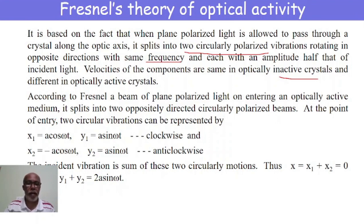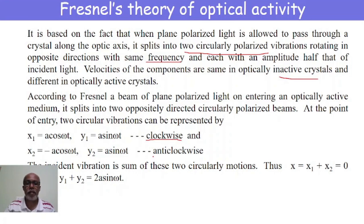At the point of entry, the two circular vibrations can be represented as: x₁ = a·cos(ωt), y₁ = a·sin(ωt) for the clockwise circularly polarized light, and x₂ = −a·cos(ωt), y₂ = a·sin(ωt) for the anti-clockwise circularly polarized light.